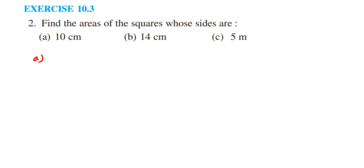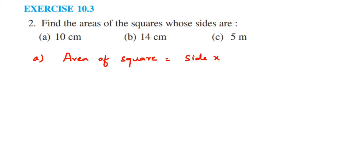Now remember, the area of a square is side into side, or side squared. So the area formula — let me write it down — area of square is equal to side multiplied by side, or you can write it as side squared.